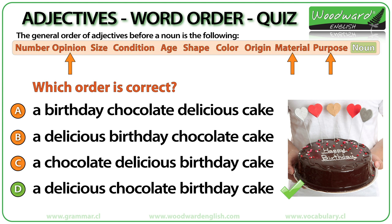A delicious chocolate birthday cake. Delicious is an opinion, chocolate is the material the cake is made of, and birthday is the purpose of the cake. Opinion comes before material, and then we have purpose.